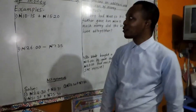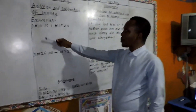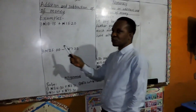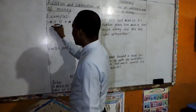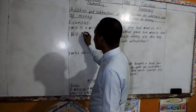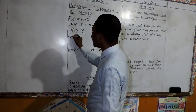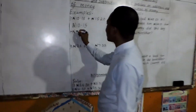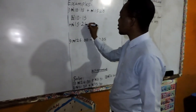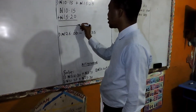Okay, addition and subtraction of money. We have 10 naira 15 kobo plus 15 naira 20 kobo. I told you, the first thing you do is to what? Arrange. Okay, arrange and write your naira. 10 naira, 15 kobo — put the plus sign. What are you having there again? 15 naira, 20 kobo. And write your naira. That is good.